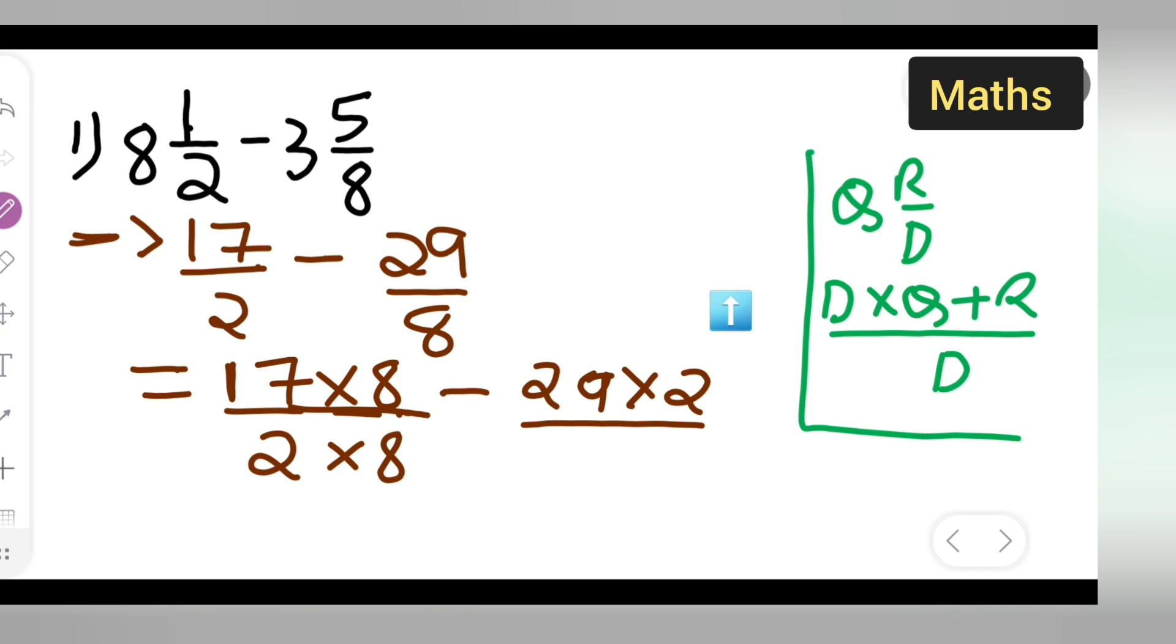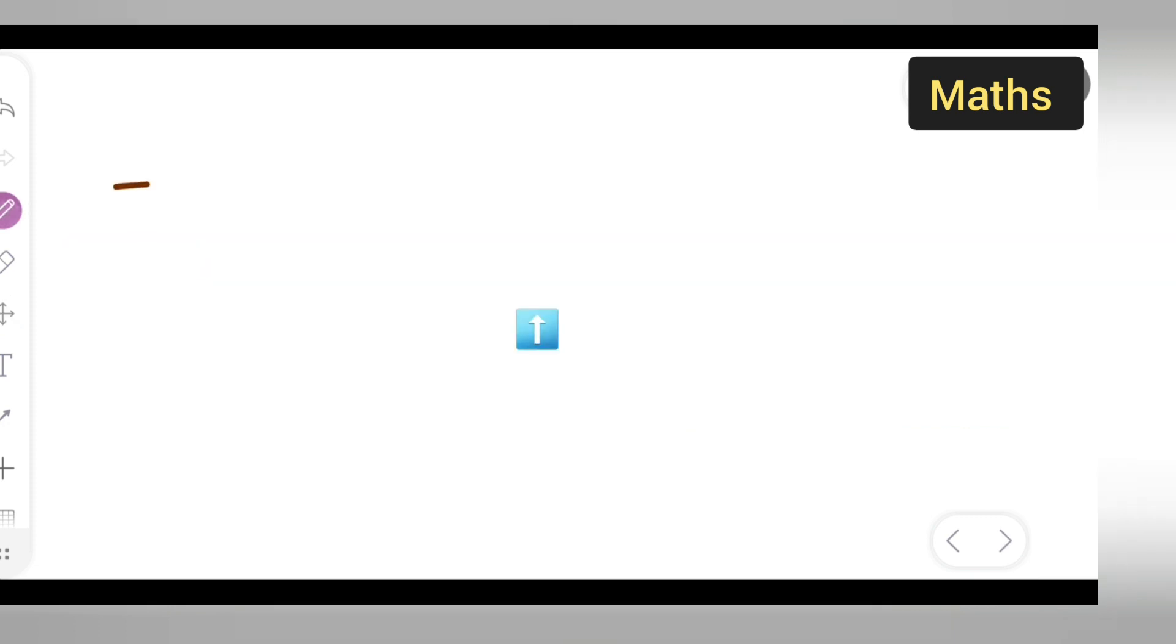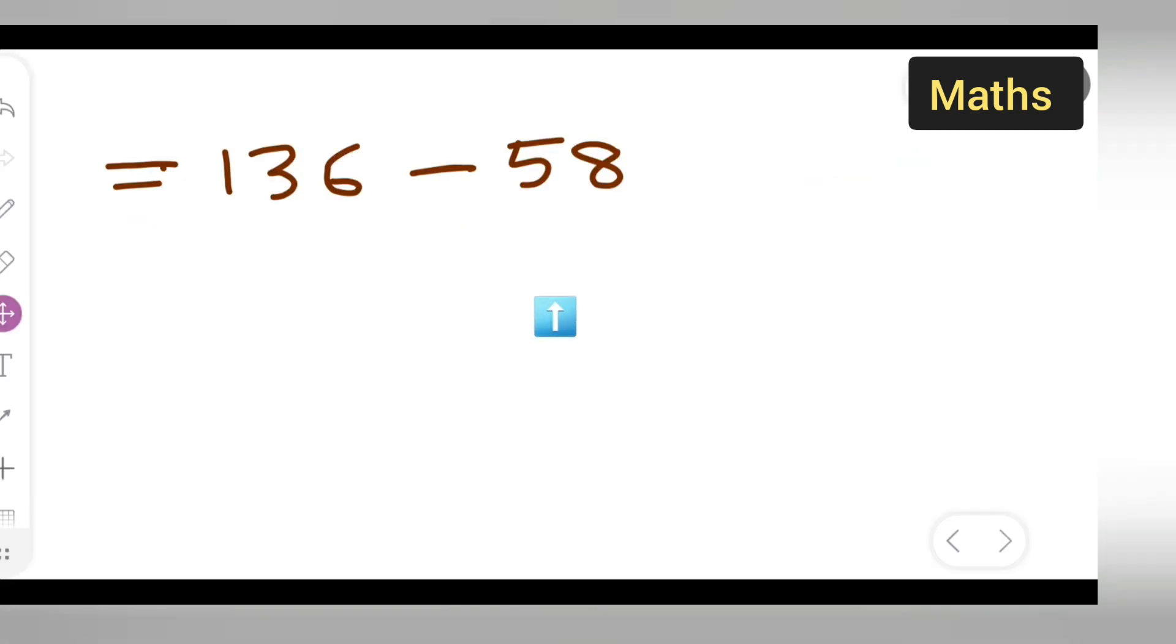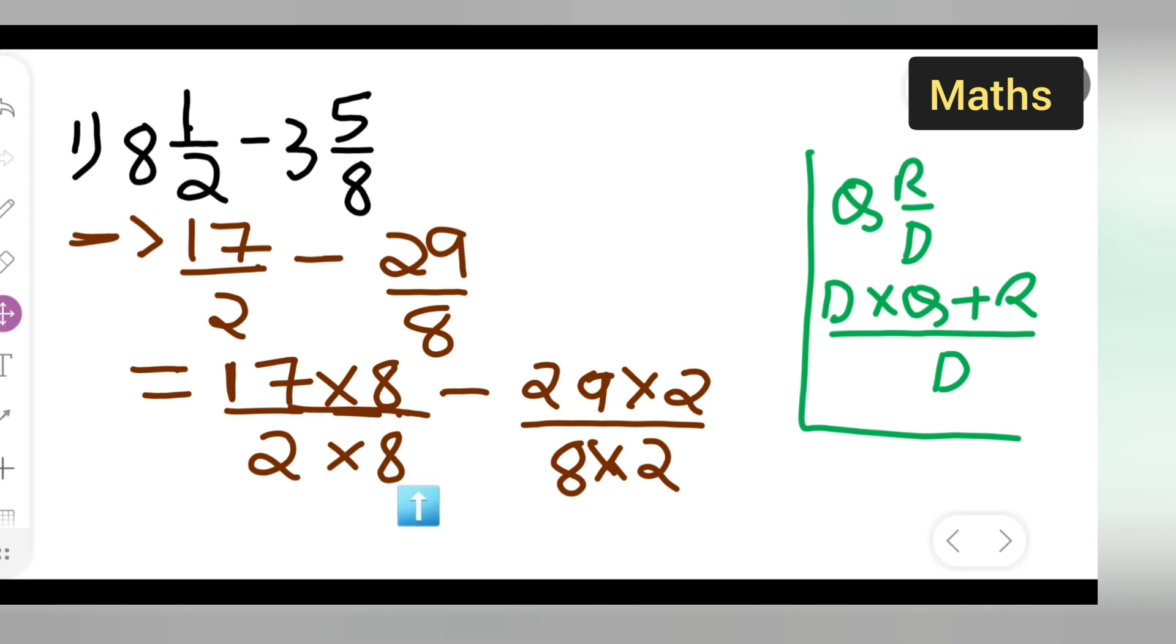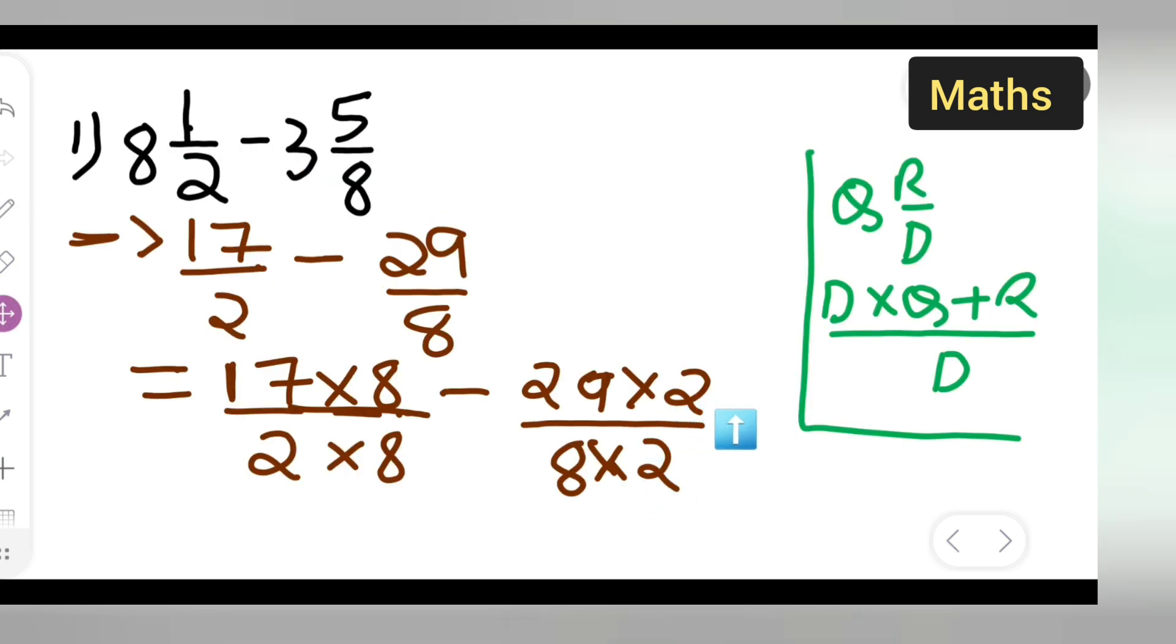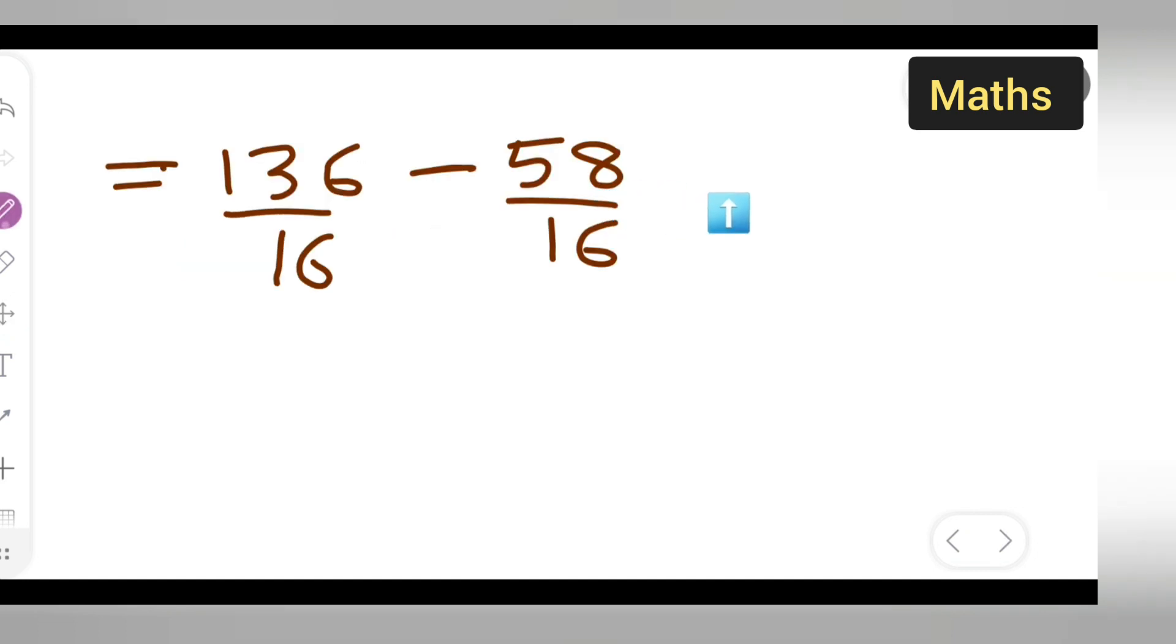17 upon 2, multiply by 8 in both numerator and denominator. 29 multiplied by 2, and 8 multiplied by 2. So 17 multiplied by 8 gives 136 upon 16. 29 multiplied by 2 gives 58. Now the denominators are the same.